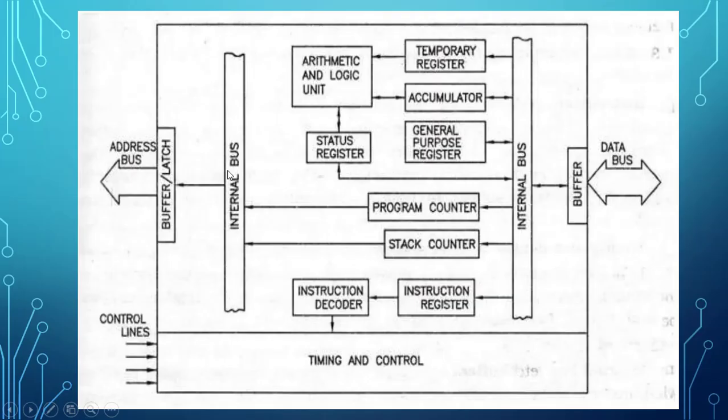This diagram that you are looking on the screen is for the architecture of generic microprocessor. There are components that we have previously discussed, like ALU, timing and control, and all three types of buses.